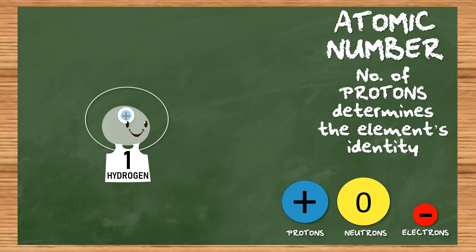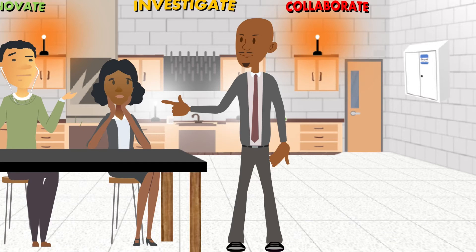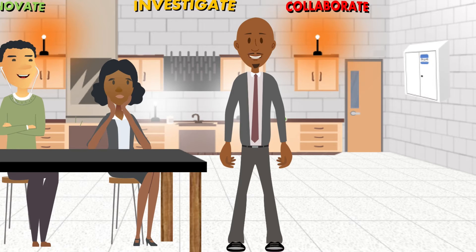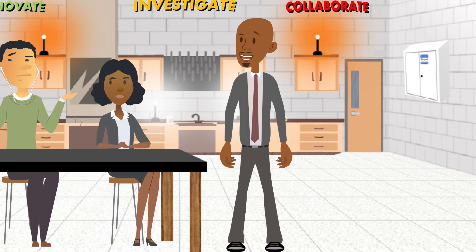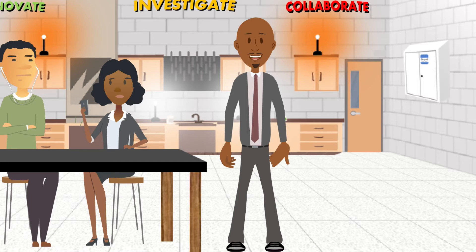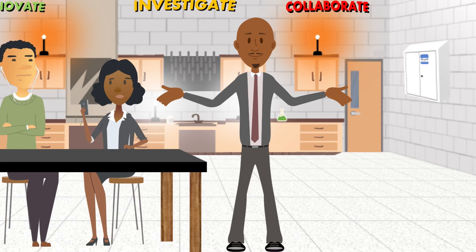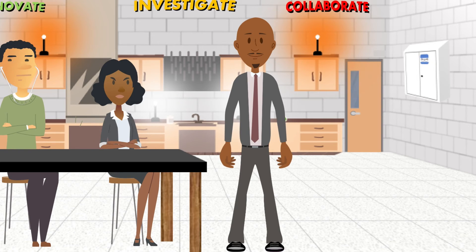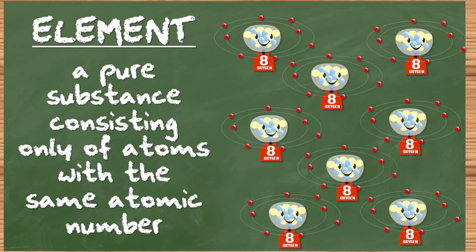I've heard of hydrogen too. Does hydrogen not have a neutron? It does not matter — if it has one proton, it's hydrogen. These atoms can arrange themselves in different ways. If we group a bunch of separate oxygen atoms together, we can call that an element — a pure substance consisting of only atoms with the same atomic number. And they can't be broken down into smaller atoms.